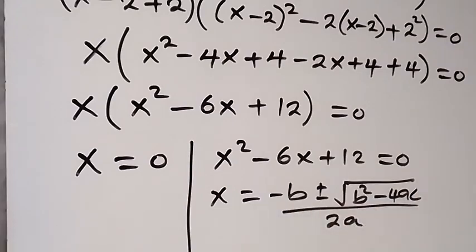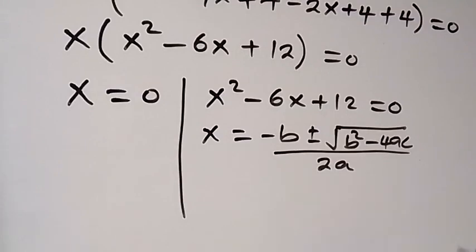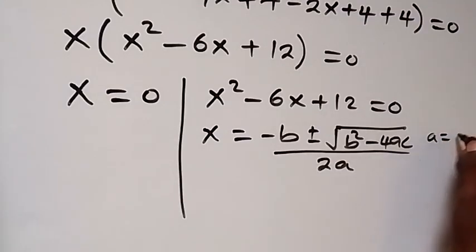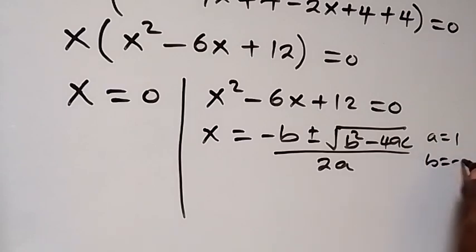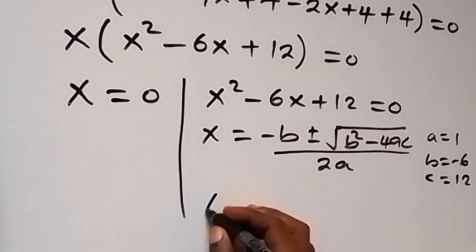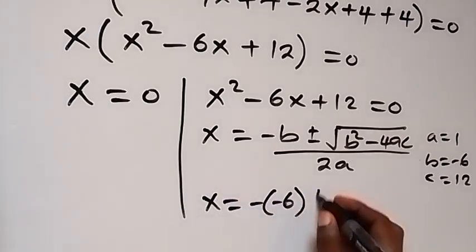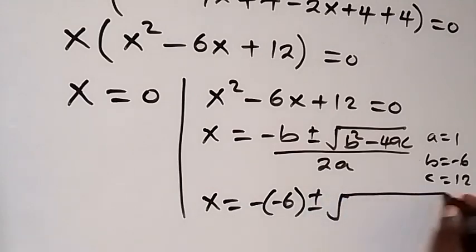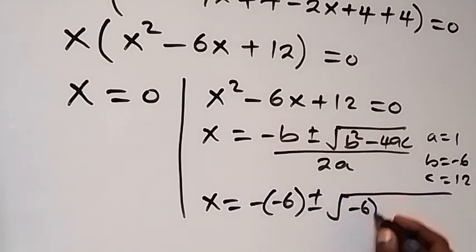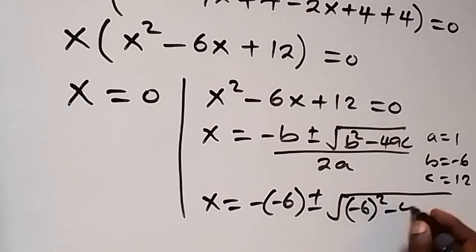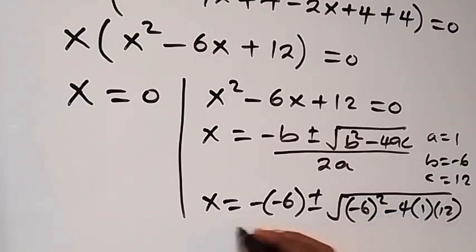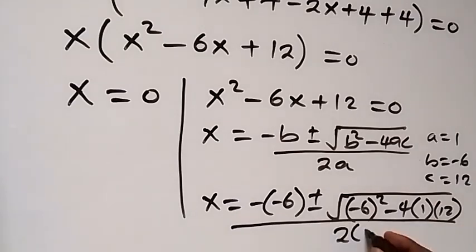In this equation, a equals to 1, b equals to minus 6, and c equals to 12. Substituting here, we have x equals to minus(minus 6) plus or minus square root of (minus 6)² minus 4 times 1 times 12, all over 2 times 1.